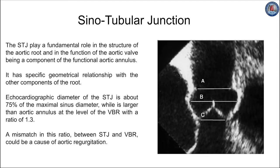In normally healthy hearts, the echocardiographic diameter of the sinotubular junction is about 75% of the maximal sinus diameter, while it is larger than the aortic annulus at the level of the virtual basal ring, with a ratio of 1.3, as evidenced by the line in the figures. A mismatch in this ratio between the sinotubular junction and the virtual basal ring is a frequent cause of aortic regurgitation.